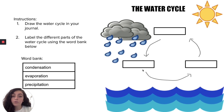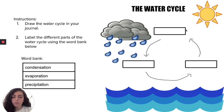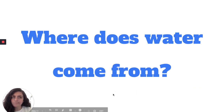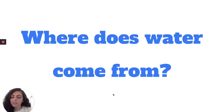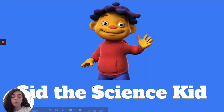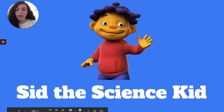We know that water is recycled within the earth and keeps going in circles. But we still have the question: where does water come from? We know it's within the earth, but how does it get to our house? Luckily, I have a friend who had that same question and asked his friends and his teacher — and he's going to help us find our answer. His name is Sid the Science Kid.